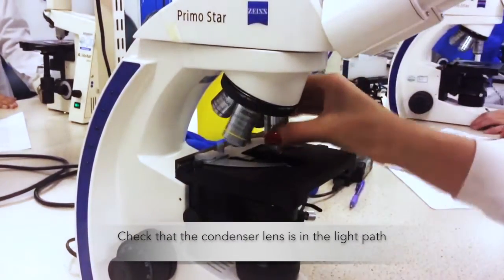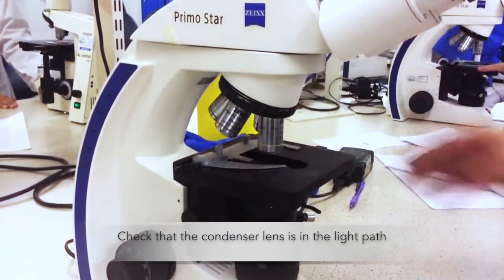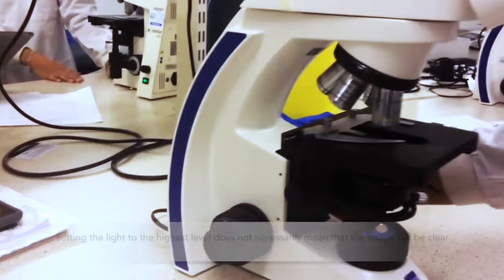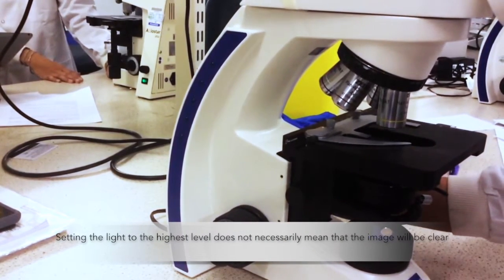Turn the revolving nose piece and select the x10 objective. Adjust the light source to a comfortable level using the light rheostat.